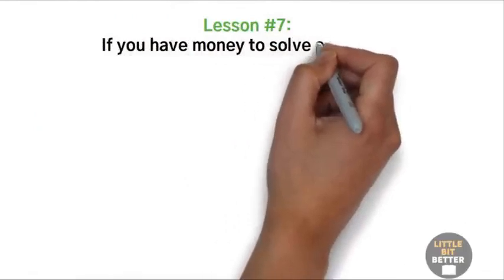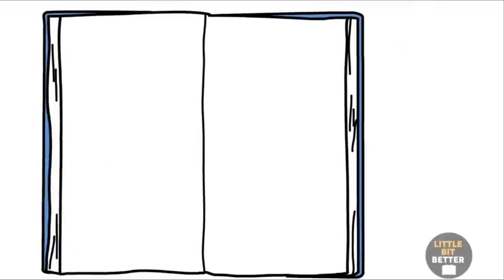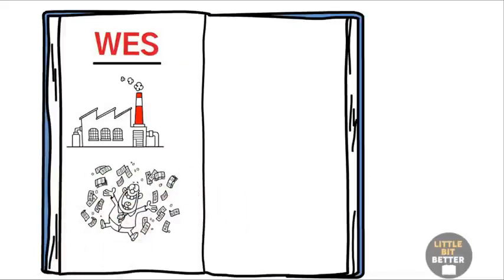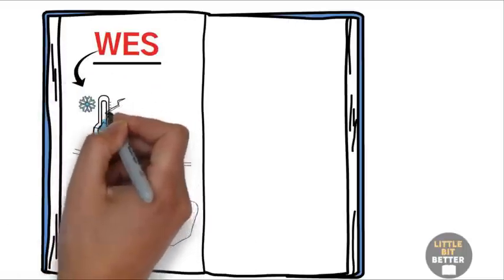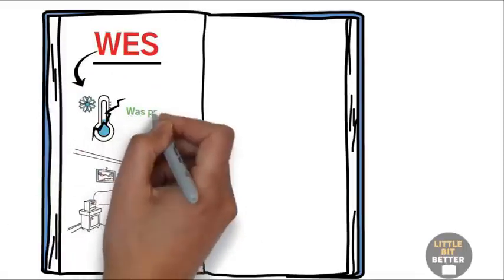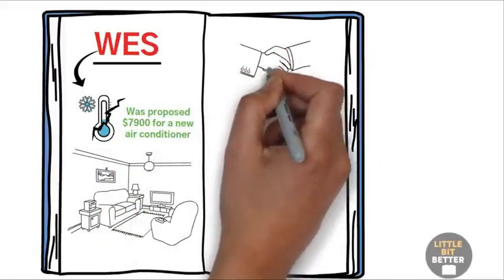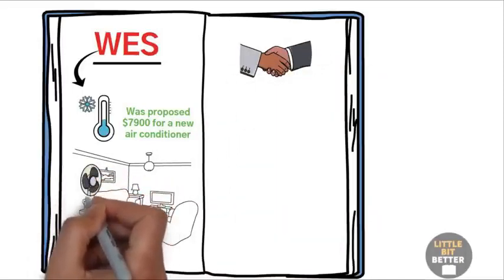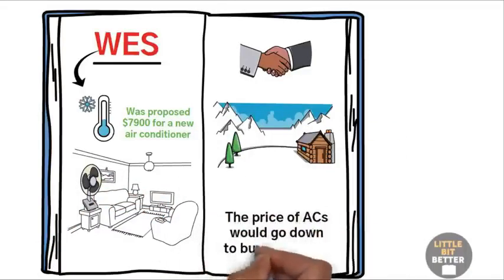Lesson number seven. If you have money to solve a problem, then you don't have a problem. There's a story in the book about an entrepreneur named Wes that explains this lesson very well. Wes built a company and sold it, which made him a billionaire. Two weeks after selling his company, Wes found out that the air conditioner in his house was broken. He got a quote from a repair person and was proposed $7,900 for a new air conditioner. Being a former contractor, Wes decided to handle fixing the air conditioner on his own by reducing the load on the fan to cool down the house. And then he would wait for winter when the price of ACs would go down to buy a new one. This would require him to invest a few hours on the roof, but would save him a lot of money.